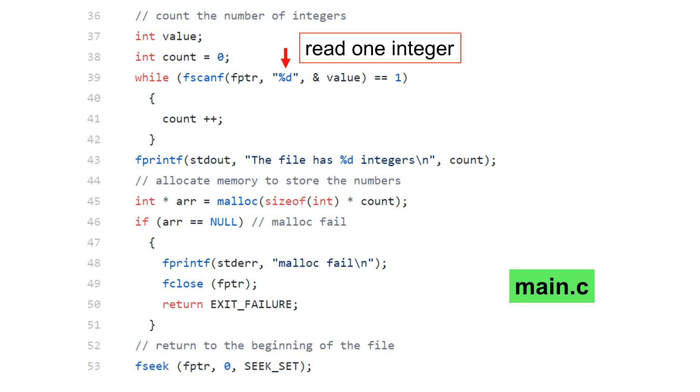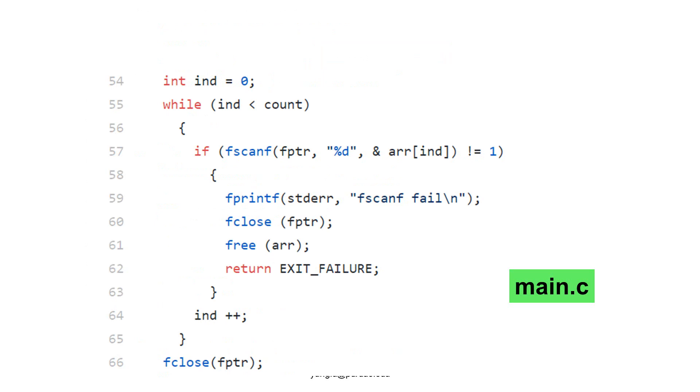Line 53 uses fseek to return to the beginning of the file. Lines 55 to 65 read integers from the file. Each time, the program reads one integer in line 57 and stores the newly read value into the array.